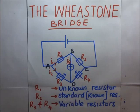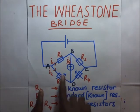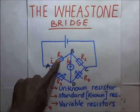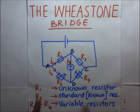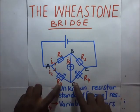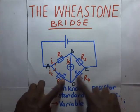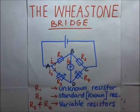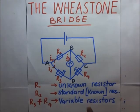Those are the four resistors that make up the Wheatstone bridge. R1 is an unknown resistor which we are supposed to find. R2 is a standard resistor whose resistance is known. R3 and R4 are variable resistors whose resistances can be read and adjusted.